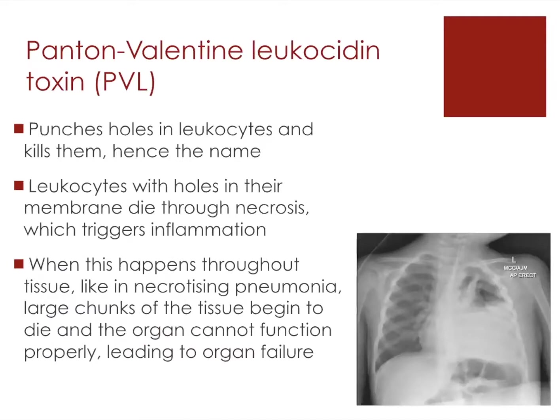Panton-Valentine leukocidin toxin (PVL) punches holes in leukocytes — our immune cells — and kills them, which gives it its name. If this happens throughout tissue, it can lead to necrosis, which triggers inflammation. If this process occurs throughout the lungs, it can cause necrotizing pneumonia, where large chunks of lung tissue begin to die off and the organ cannot function properly. This leads to complete organ failure and is life-threatening.